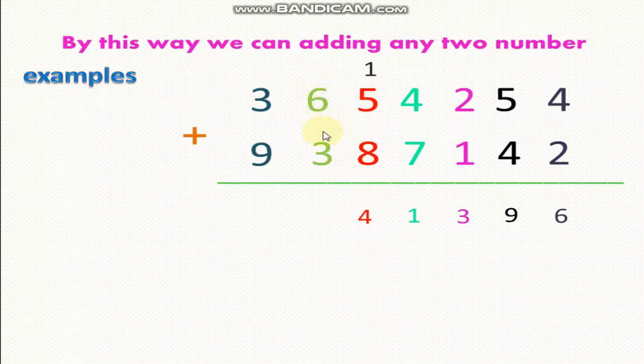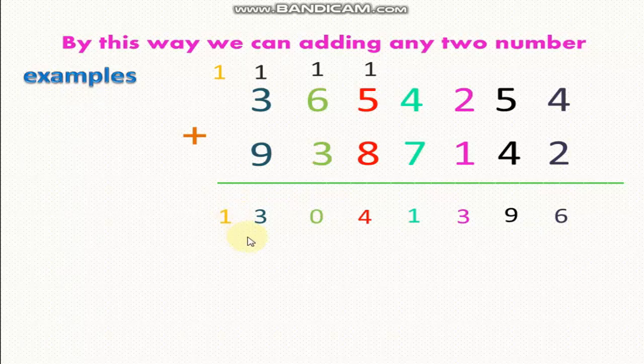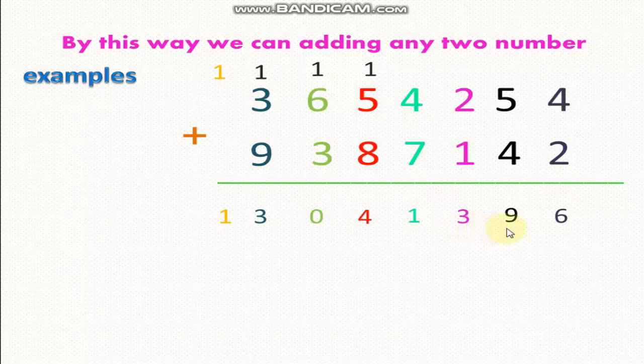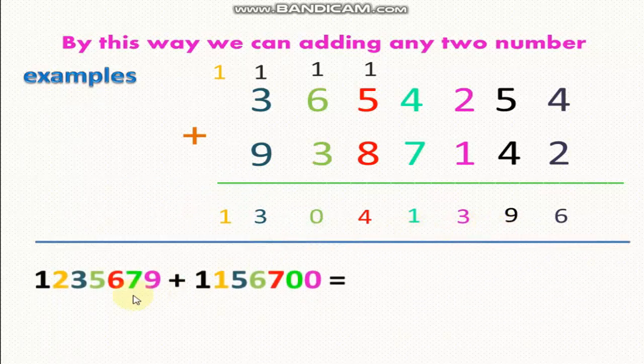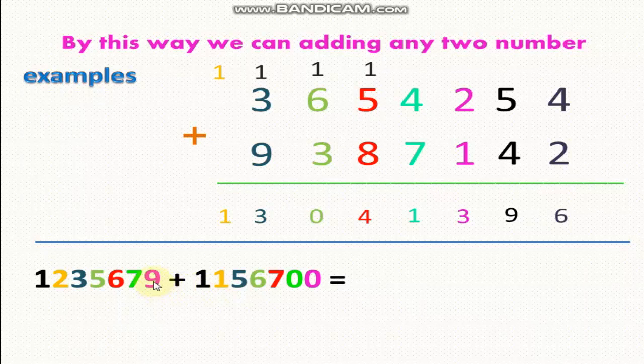1 plus 6 equals 7. 7 plus 3 equals 10. Write 0 and carry up 1 above 3. 1 plus 3 equals 4. 4 plus 9 equals 13. Write 3 and carry up 1. There is no digit below digit 1, so we'll bring it down, and the result will be 13 million.